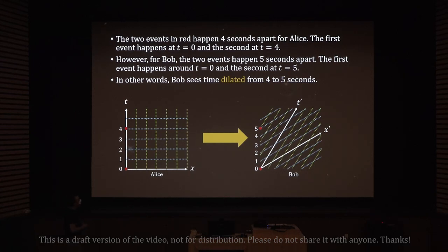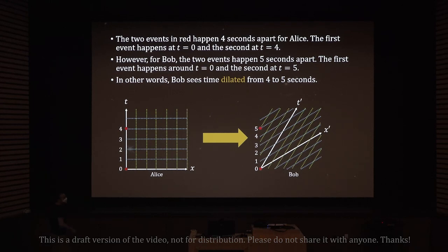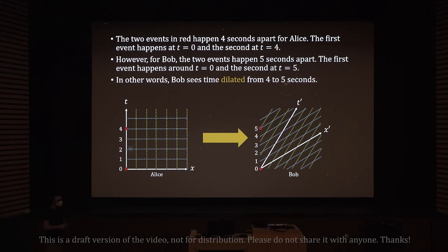For Bob, the two events actually happen five seconds apart. The space-time positions of the events haven't changed — if I move these graphs on top of each other, the red dots are in the same place. It's just that Bob defines space and time differently. According to Bob, five seconds have passed between the first and second event, because the first event happened at t-prime equals zero, and he counted one, two, three, four, five seconds on his stopwatch between the two events. So Bob sees time dilated from four seconds to five seconds.